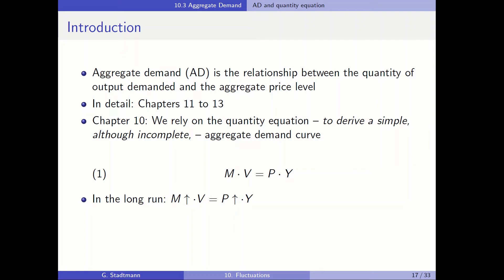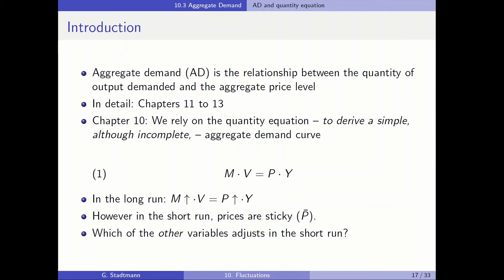In equation one, we have the quantity equation: on the left-hand side, money supply times velocity, and on the right-hand side, price times output — or goods demand Y. In the long run, an increase in money supply also leads to an increase in prices. However, in the short run, we just learned that prices are sticky.